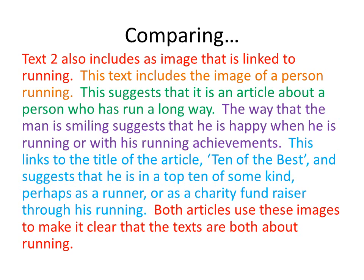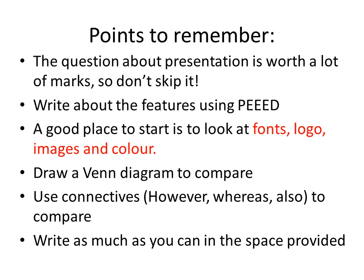In the time allowed on the foundation paper, you should manage to do about two or three PEEDs to compare each article — comparing logos, colours, images, and layout. Points to remember: this question is worth a lot of marks so don't skip it. Write about features using PEEED. A good place to start is fonts, logos, images, and colour. Foundation students should draw a Venn diagram to compare, and use connectives like 'however', 'whereas', or 'so' to compare. Most importantly, write as much as you can in the space provided. You could even tackle this question first while you're full of energy — for foundation students it's worth the most marks, so it might be a good place to start.